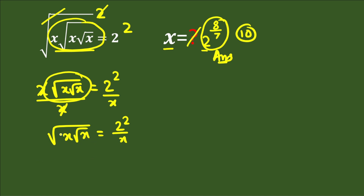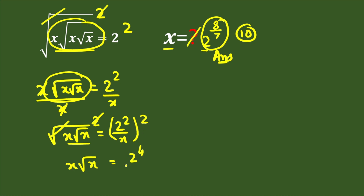Again we square both sides to remove the square root. On the left-hand side, the square and square root cancel, leaving x times square root x. On the right-hand side, 2 squared raised to the power of 2 gives 2 to the power of 4, with x squared in the denominator.